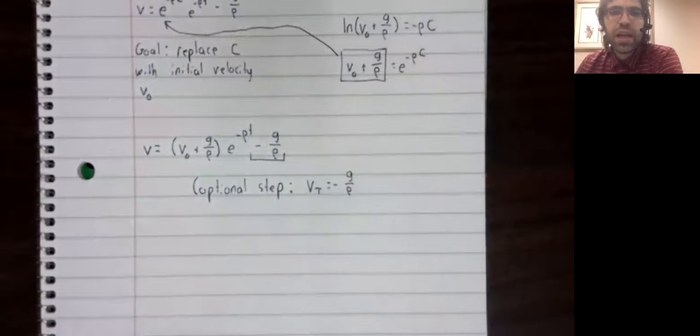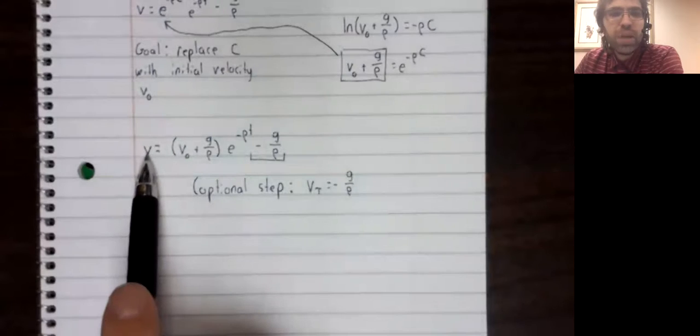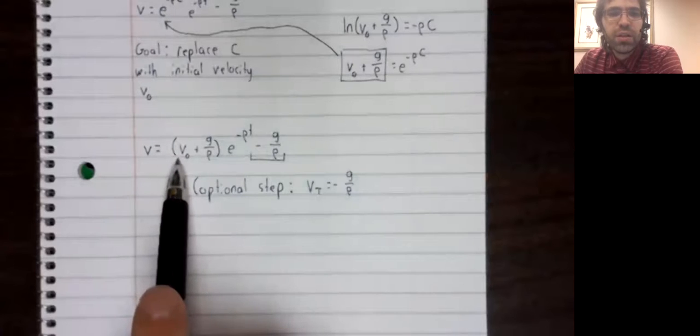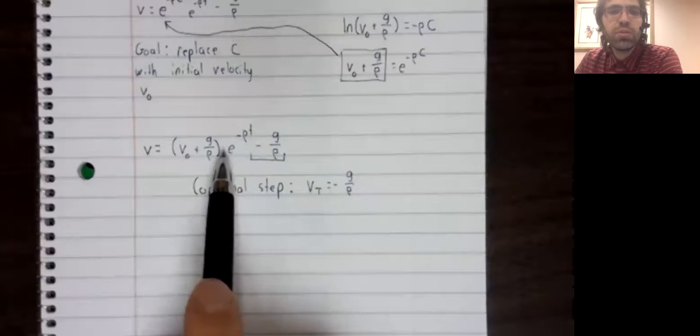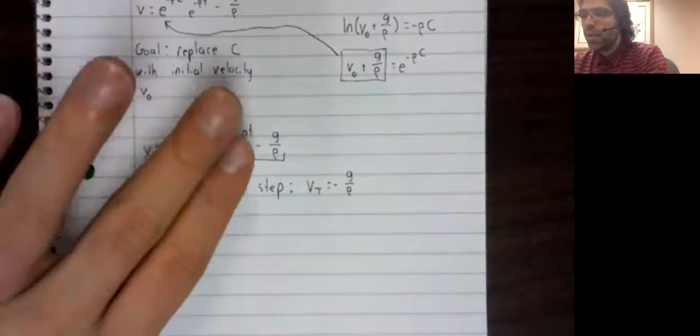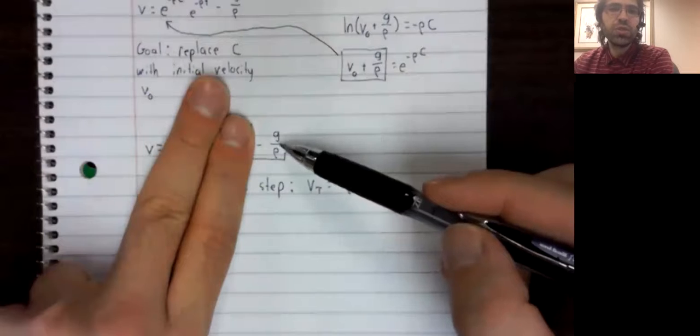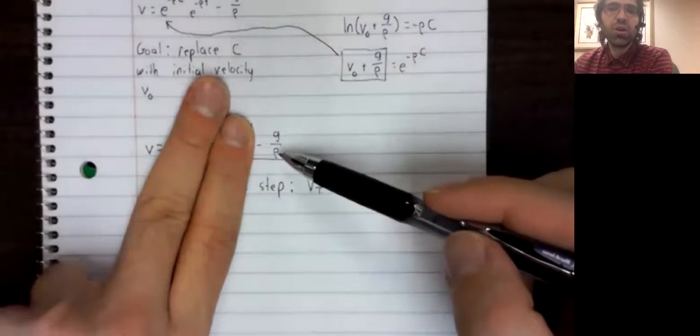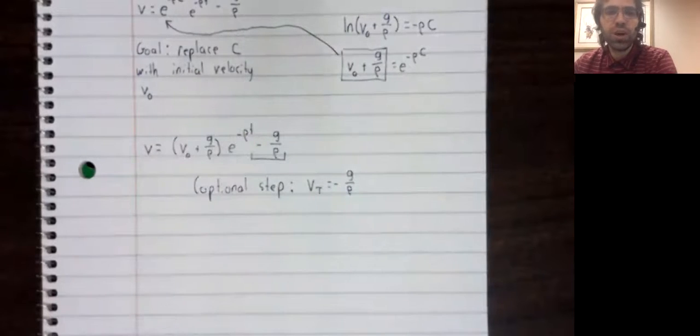Incidentally, you can now see that the second way. If you take the limit as t approaches infinity of the velocity, this is constant. This is zero. It goes to zero because of this negative sign. So as t approaches infinity, velocity approaches this term, which we'd already figured out was terminal velocity.